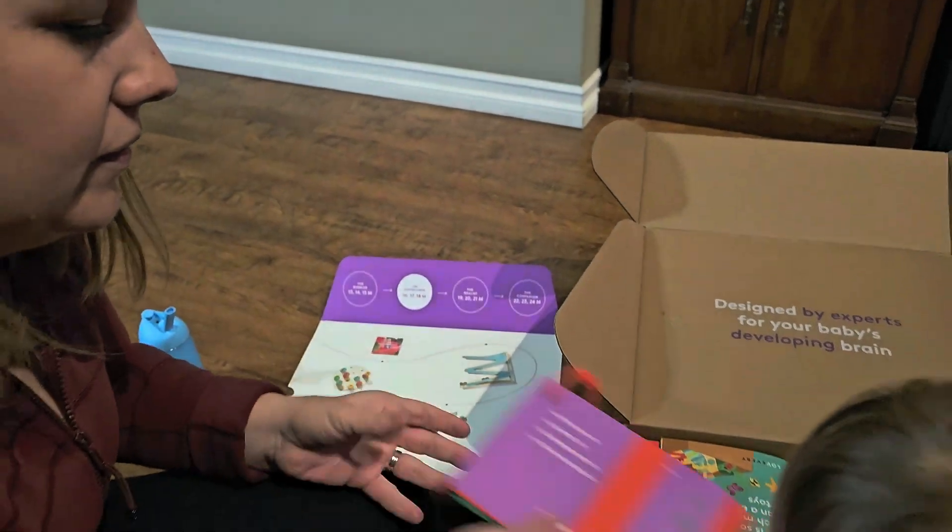So if you were interested in getting a box like this, you just have to go on the website. You put in the information of the child, so you know the age, and I'll start sending you play kits for their development.